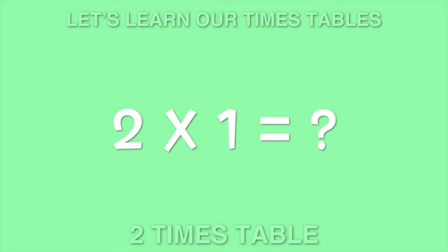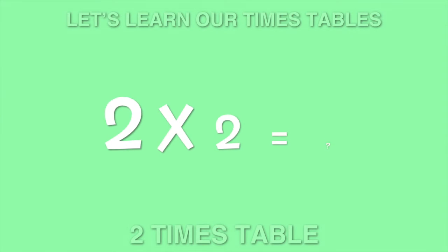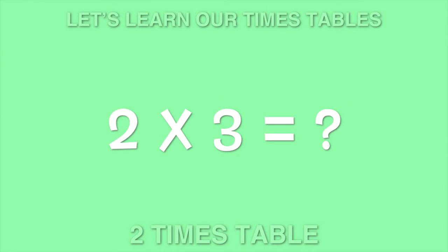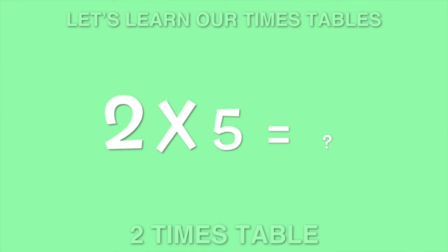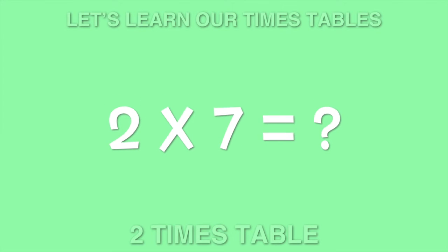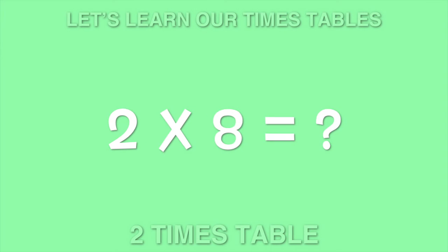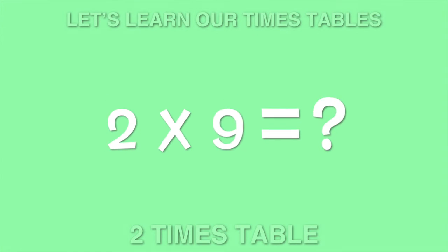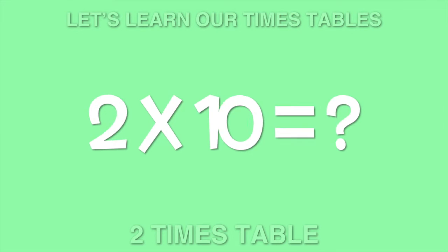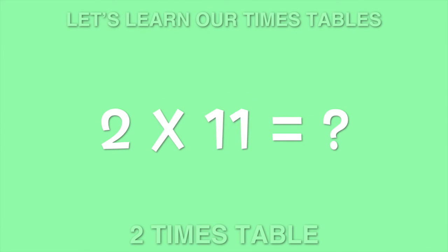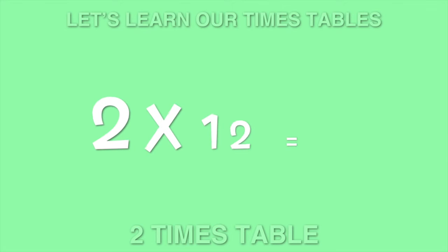Two times one is... Two times two is... Two times three is... Two times four is... Two times five is... Two times six is... Two times seven is... Two times eight is... Two times nine is... Two times ten is... Two times eleven is... Two times twelve is...